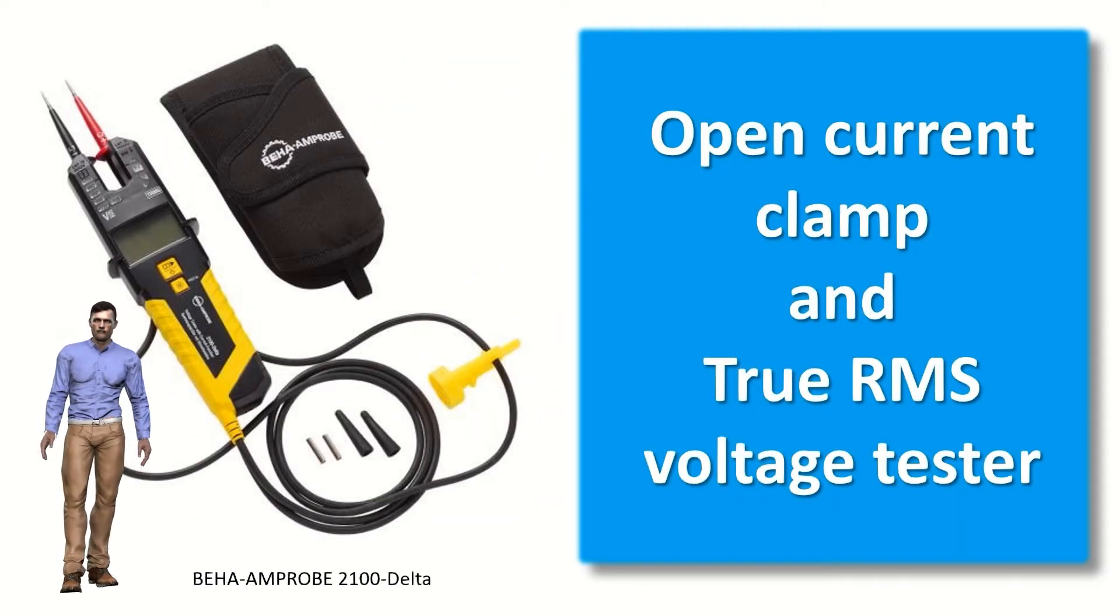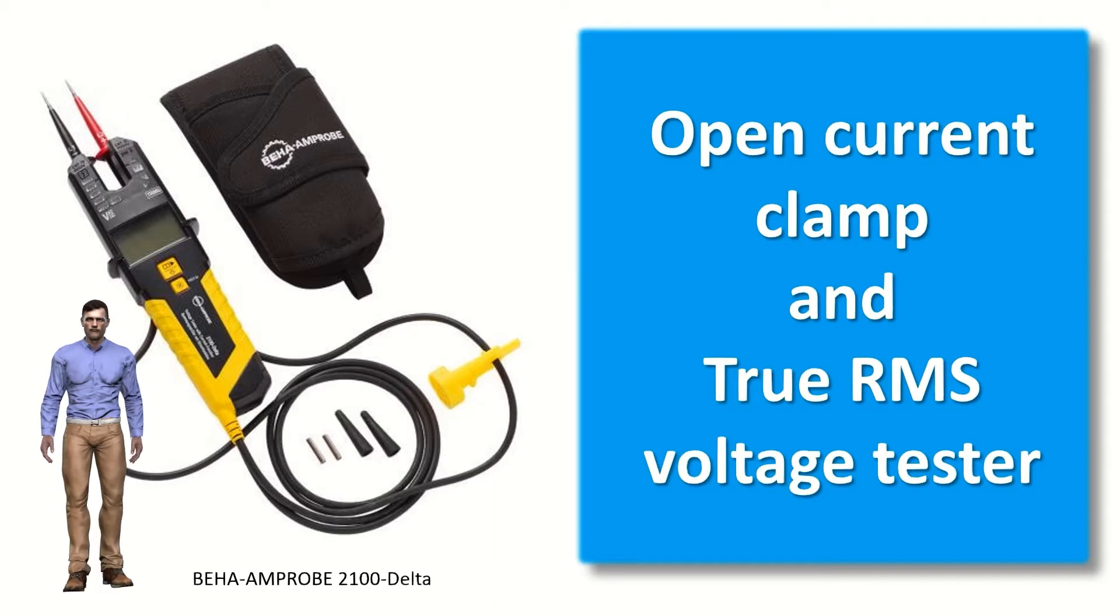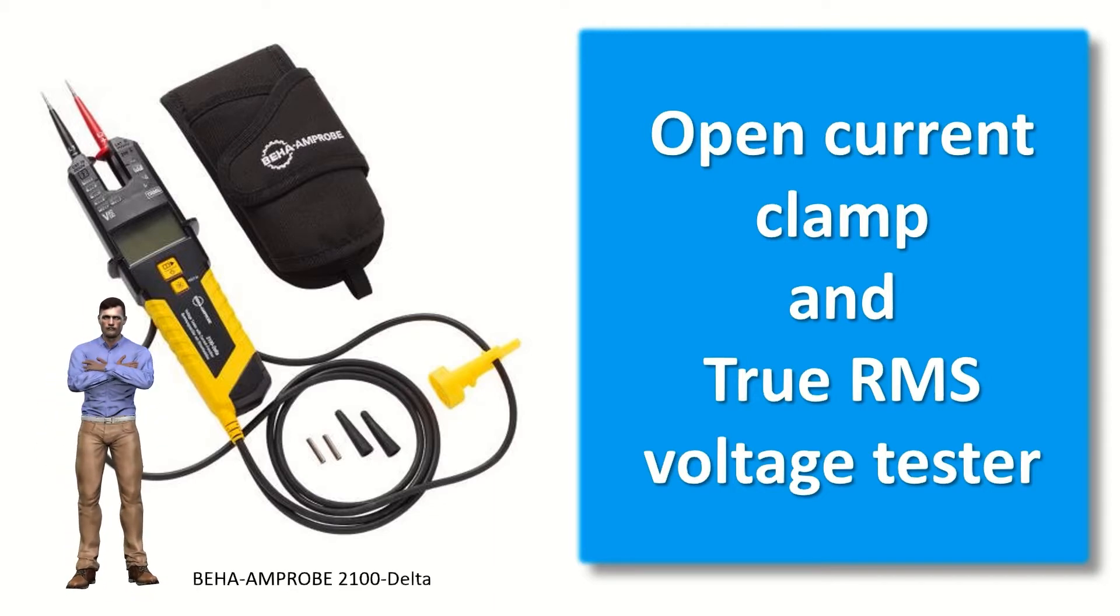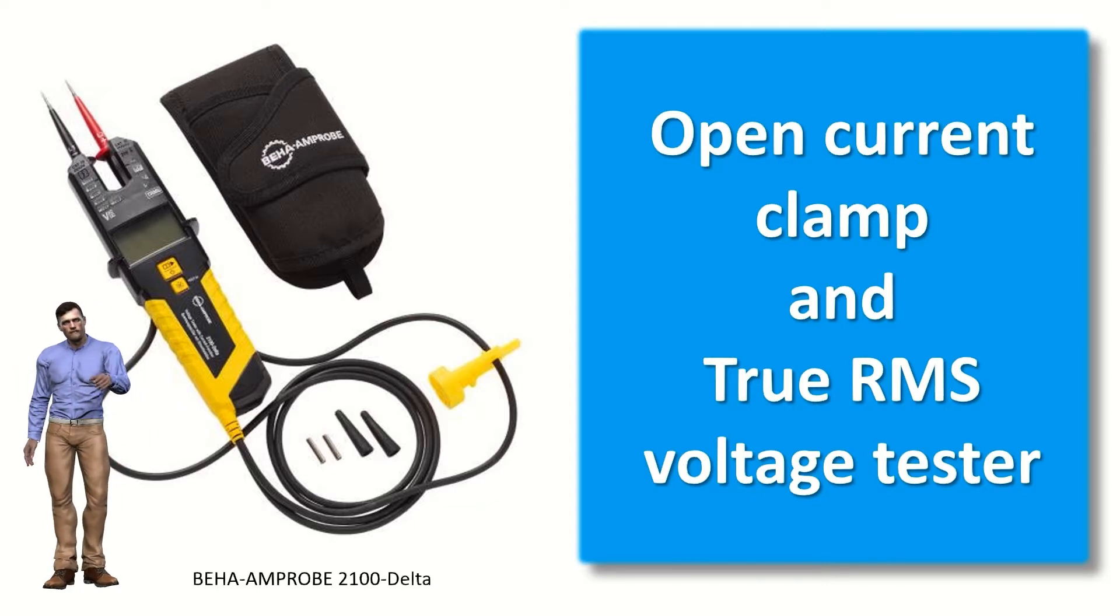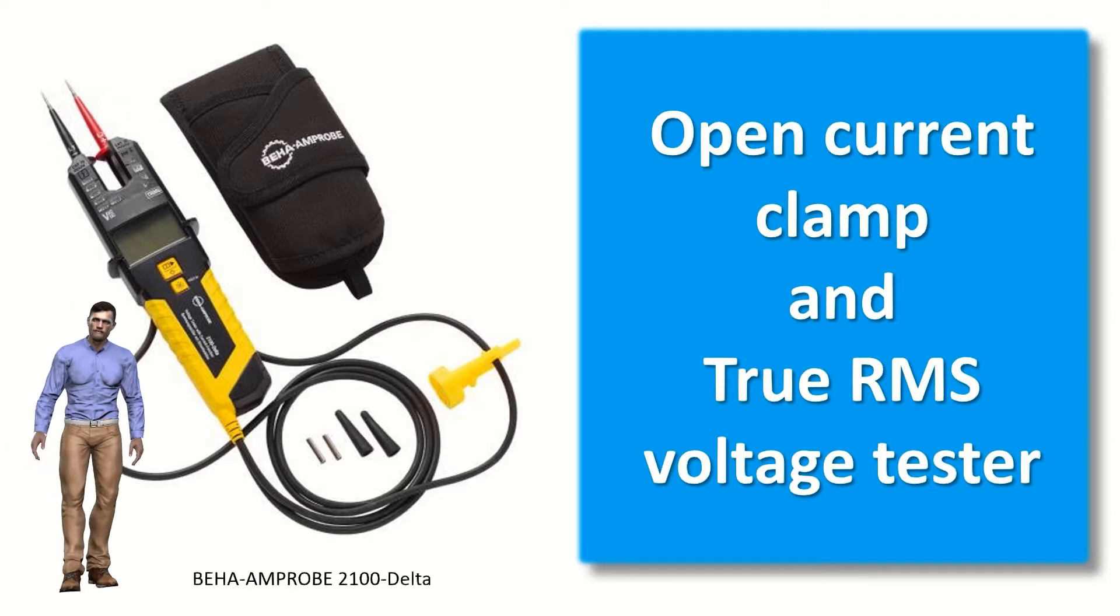In the supply of this Amprobe 2100 Delta voltage and current measurement tester, in addition to including documentation such as the user manual in various languages, such as English, Spanish, French, German, Italian and others, it also includes these other accessories. A practical case to carry the instrument attached, for example to the belt of your trousers. Two 4mm banana tips that can be screwed onto the test leads. Two caps to reduce the exposed length of the tips, as well as a plastic accessory to protect the tips and prevent us from getting punctured by them. The clamp works with two 1.5 volt alkaline batteries, type LR03, AAA, installed at the factory.